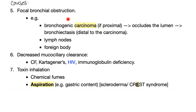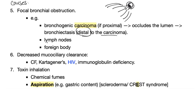Continuing with etiology: focal bronchial obstruction. For example, a proximal bronchogenic carcinoma can occlude the lumen distal to it — everything distal will not drain, will dilate, and this is bronchiectasis. It could also be a lymph node or a foreign body causing the obstruction. It does not have to be cancer. Don't say alveolar cell carcinoma — the obstruction must be in the bronchi or bronchioles.